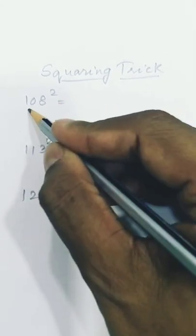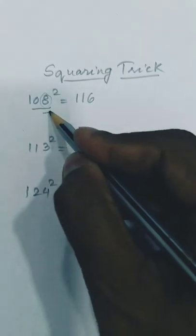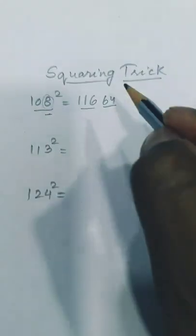what is 108 plus 8? That's 116, right? And what is 8 square? It is 64. Two digits here, three digits, perfect.